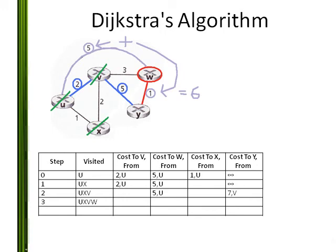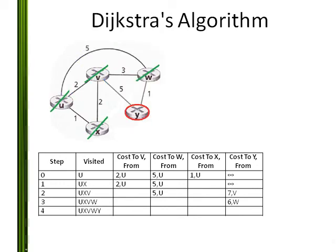I go to the next cheapest node that I have not yet visited: Y. There are no new neighbors to consider. I have finished visiting all nodes, and the algorithm is complete.